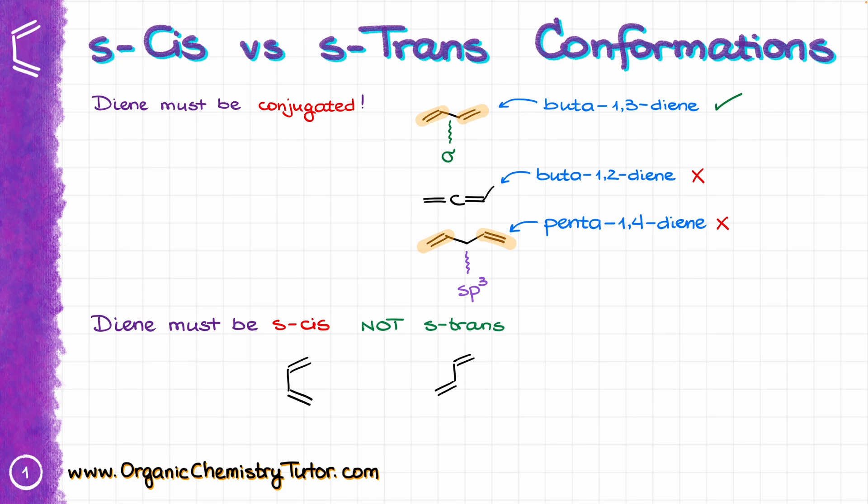The two conformations have nothing to do with the stereoconfiguration of the double bonds themselves. Rather, we are looking at the overall orientation of the double bonds compared to each other. If they make a C-shape, like this, that is going to be an s-cis conformation. If they make a zigzag, like that, that is going to be an s-trans conformation.